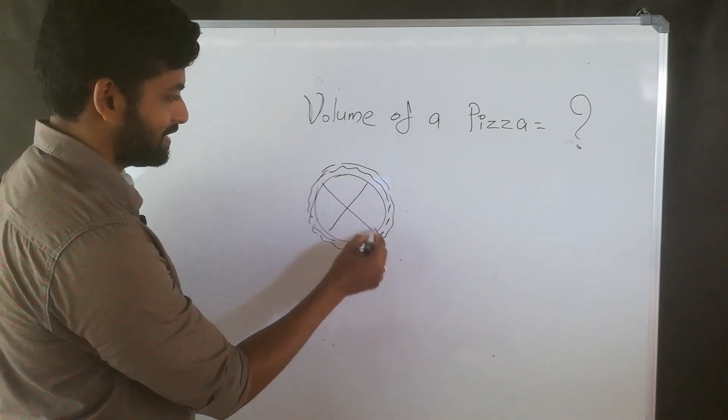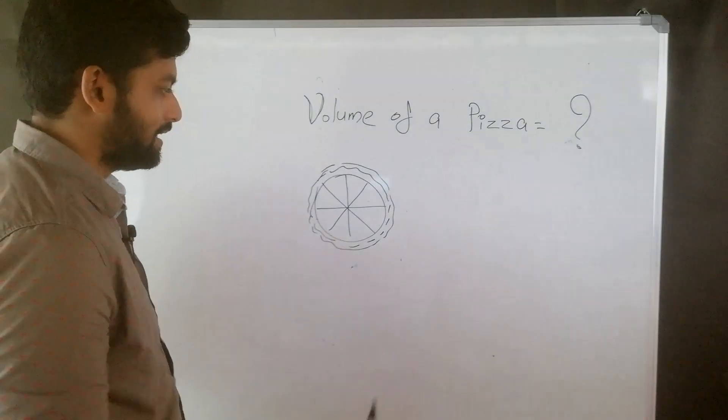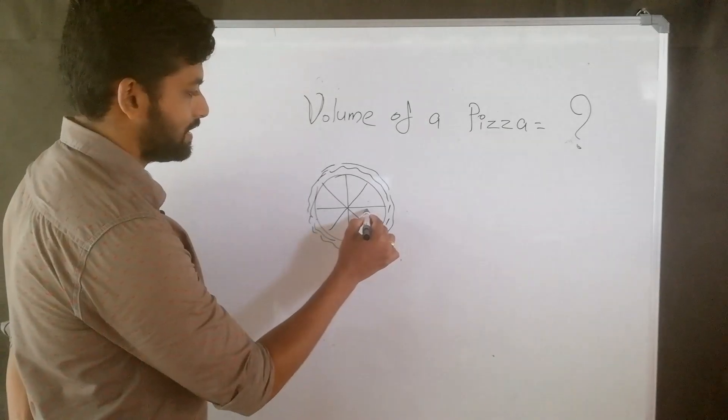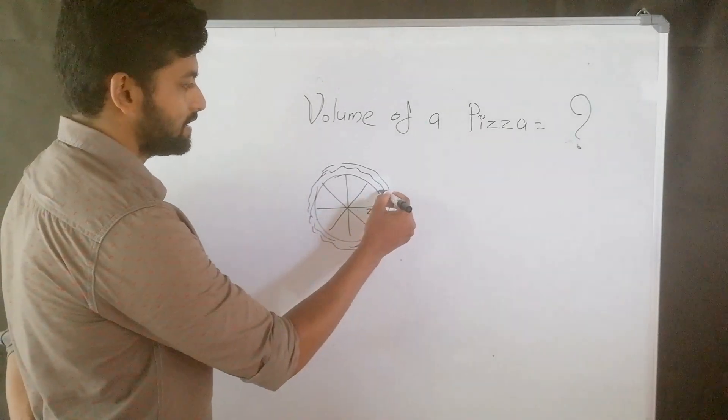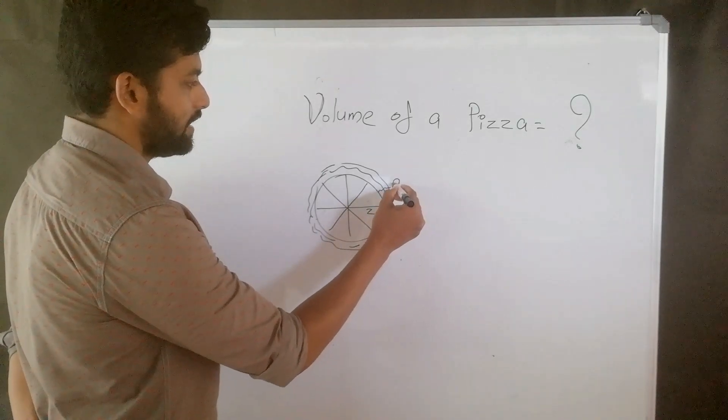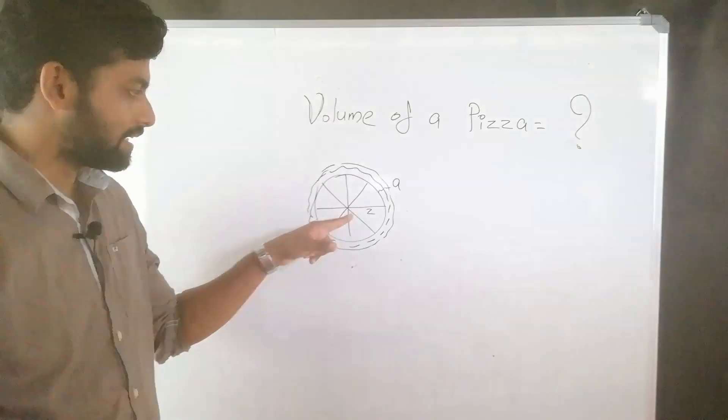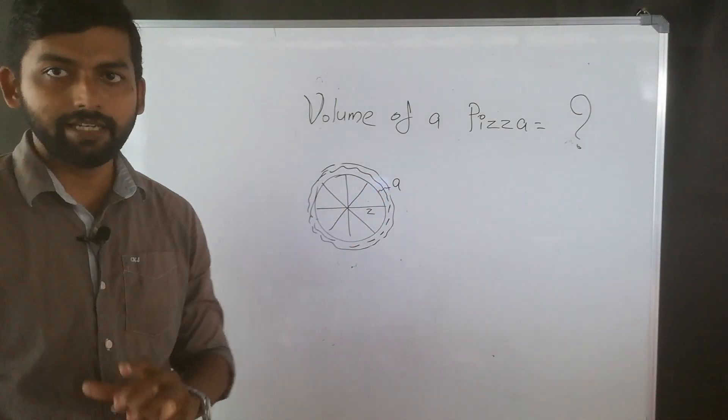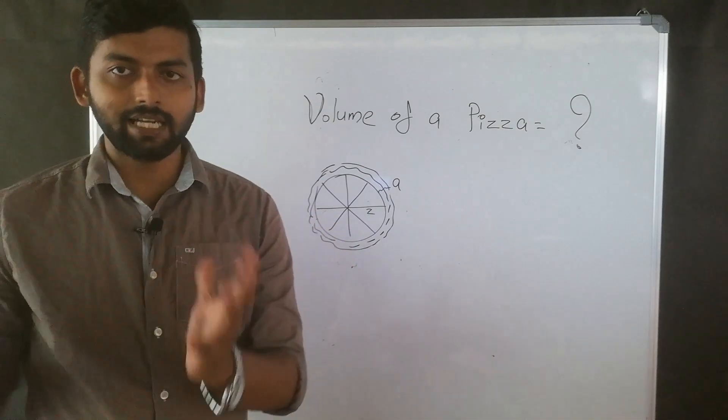Suppose this is a pizza with radius z and suppose here its height is a. Here we are considering a pizza with a radius z and its height a. We can consider this pizza as a cylindrical shape.